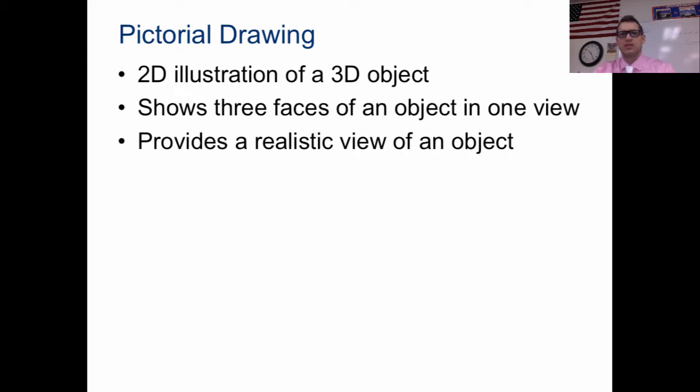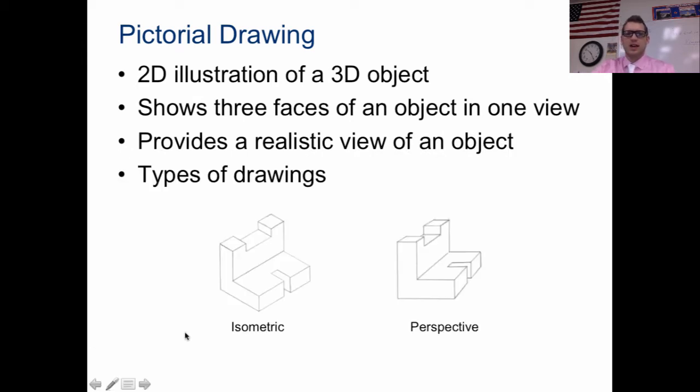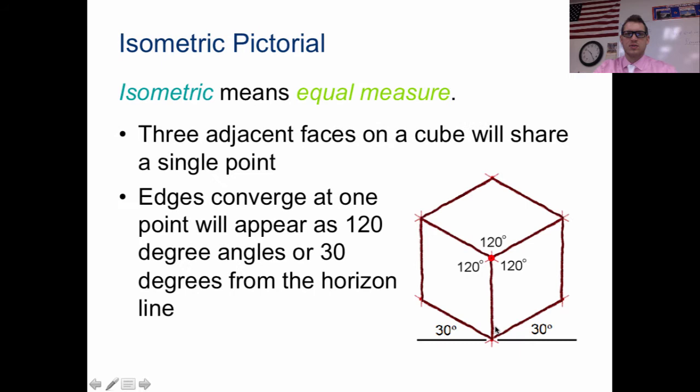You're going to learn to provide a realistic view of that object and here's two different ways that you're going to learn to draw. One is isometric, the other is perspective. So let's talk about those for a little bit.